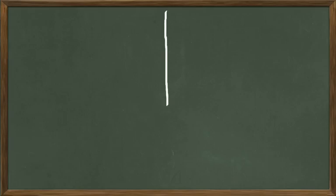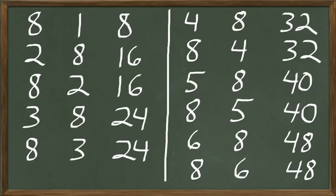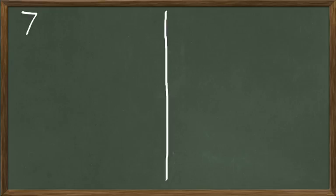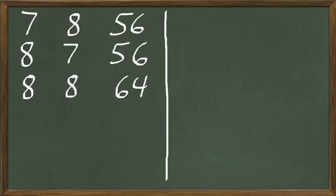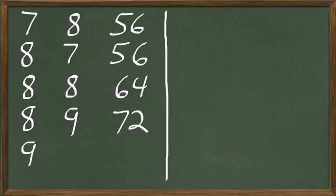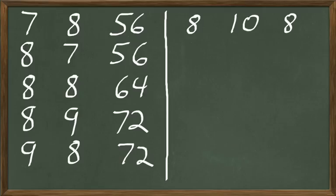Let's continue and finish up these multiplication facts. Is it 7 times 8? Yes, 7 times 8 are 56. And 8 times 7, also 56. How about 8 times 8? 8 times 8 are 64. And 8 times 9, how many are 8 times 9? 72. And 9 times 8, that's also 72. How many are 8 times 10? 8 times 10 are 80. And 10 times 8 are 80.